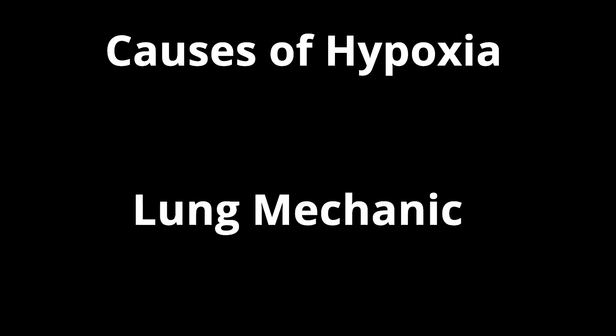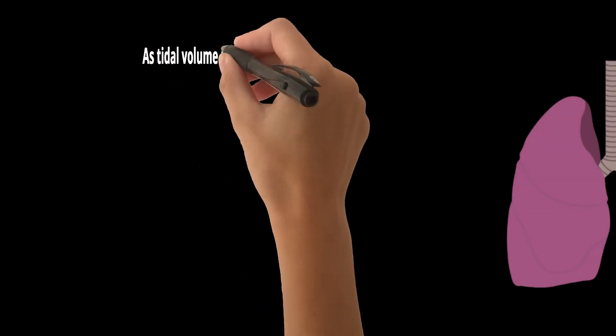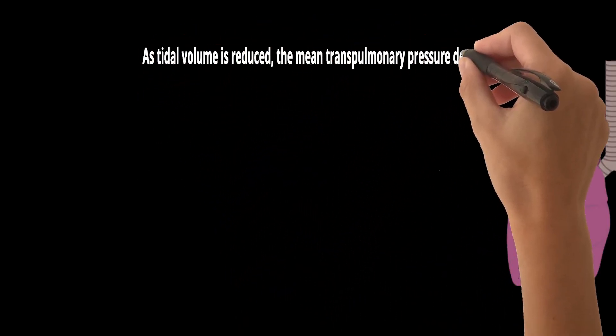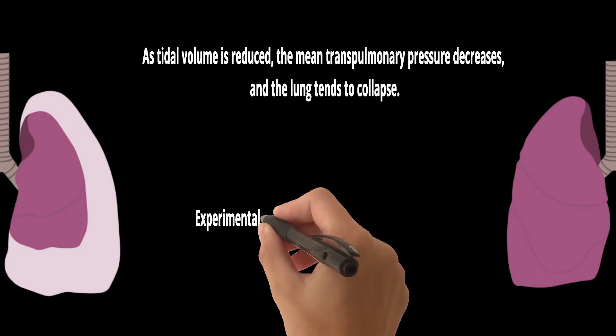There are two causes of hypoxia in extracorporeal CO2 removal. First is lung mechanics, second is gas exchange. As in extracorporeal CO2 removal, tidal volume is reduced, the mean transpulmonary pressure decreases, and the lung tends to collapse.